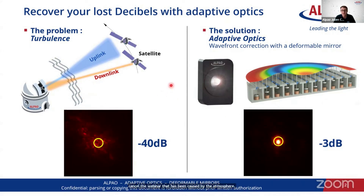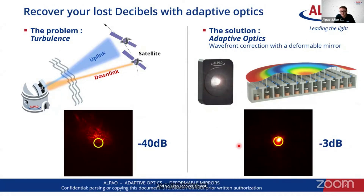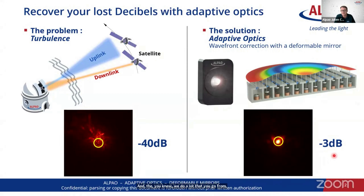These images are real images taken on a real telescope where we are operating an adaptive optics system. You can see the result in the right-hand animation: you can correct most of the perturbation, recover almost a diffraction-limited image, and most of the light is inside the monomode fiber inside the yellow circle. It is much more stable, and while there is a residual loss, you go from 40 dB on a 50-centimeter telescope down to approximately 3 dB.